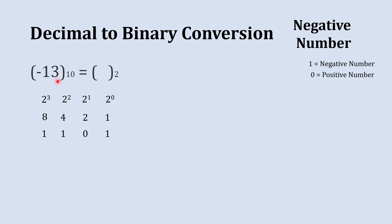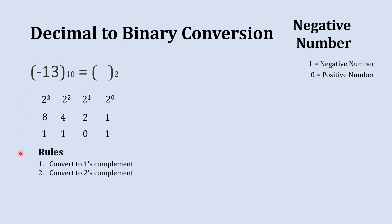Now it's time to convert into negative. Whenever you want to convert a number into a negative binary number, there are two rules. The first is you're supposed to convert to 1's complement, and then you're supposed to convert that into 2's complement.